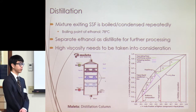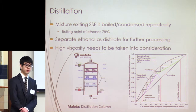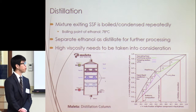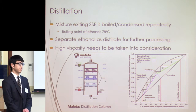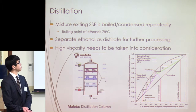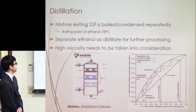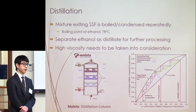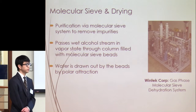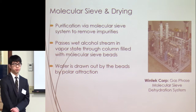Once we have ethanol, it needs to be concentrated and purified. The first step is distillation. In a distillation column, the mixture is boiled and condensed repeatedly in cycles. Since ethanol has a lower boiling point than water, it's more volatile, and its composition increases with each cycle going up the trays until we pull it off as distillate. The number of trays can be optimized using the McCabe-Thiele plot, using vapor-liquid equilibrium data and inlet feed composition. The high viscosity of the incoming mixture must be taken into account in tray design.